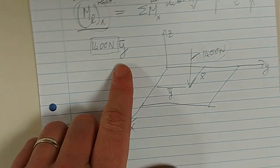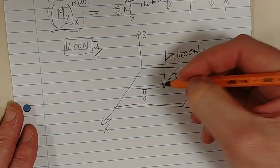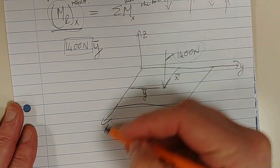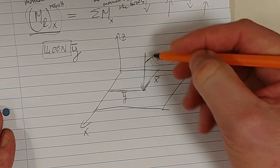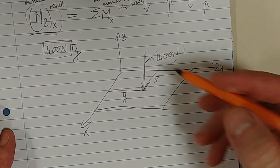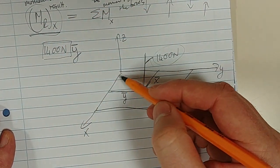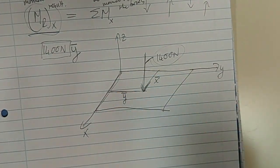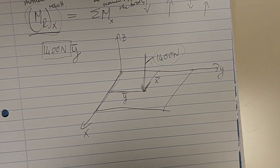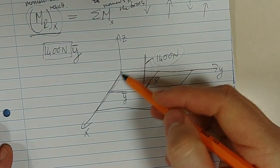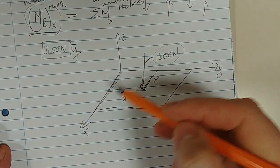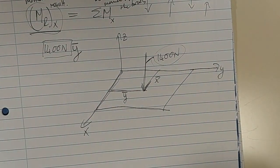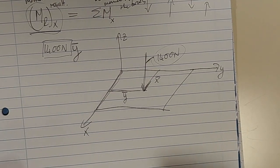The moment arm is this Y. So 1400 times the moment arm is going to give me a moment about the X axis. But how do I know if this 1400, going down in the negative Z, gives me a clockwise or an anticlockwise — that is to say, a positive or a negative moment? Remember, we're taking moments about the X axis.